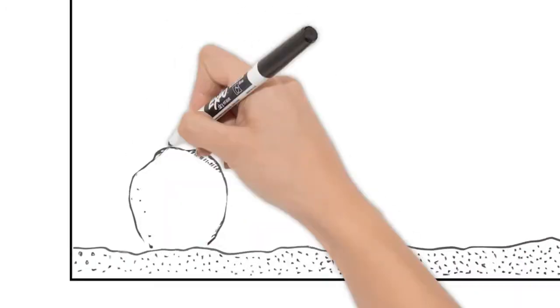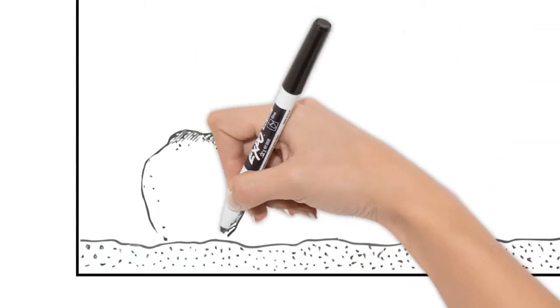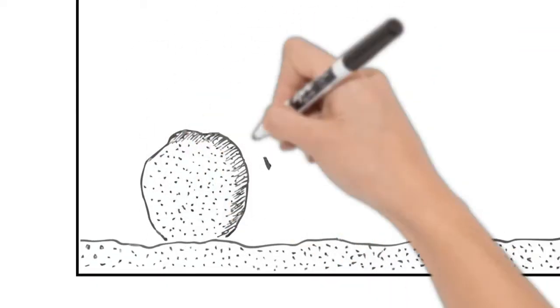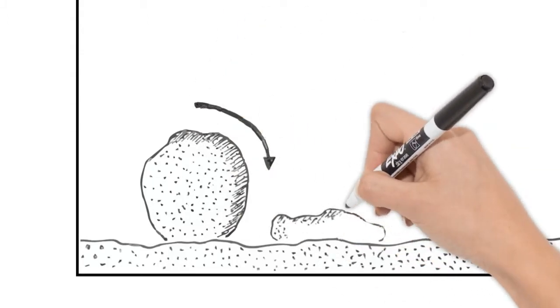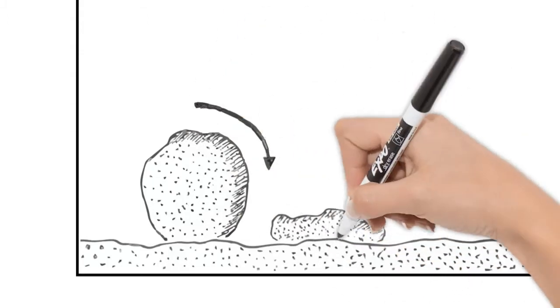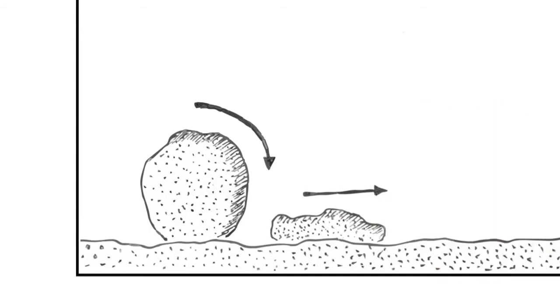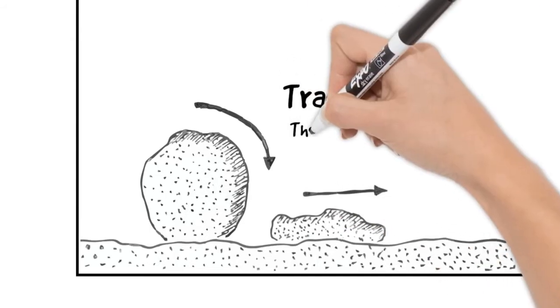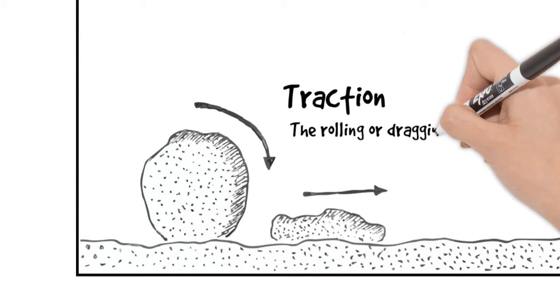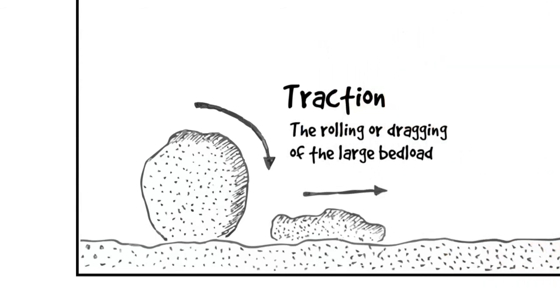Now we look at the first process which is traction, the rolling of the largest bed load so these are boulders and cobbles. Some may be rolled along the riverbed others may be dragged along the riverbed making them more rounded and flatter as they move down the bed through attrition and abrasion.